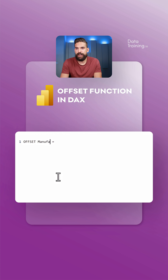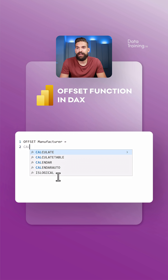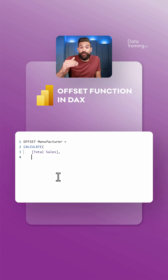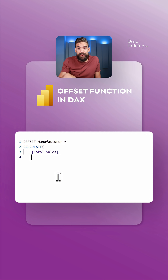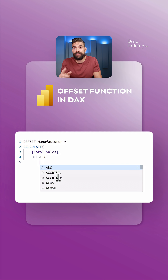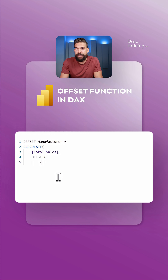We still need a CALCULATE function, so: CALCULATE, and we want the expression to be total sales. Now the interesting part — we can use the OFFSET function to take the total sales from cells above or below, from the manufacturers that are above or below the current row.